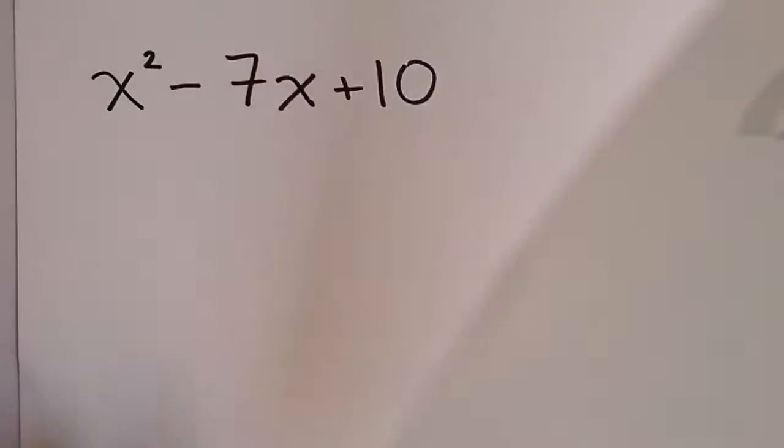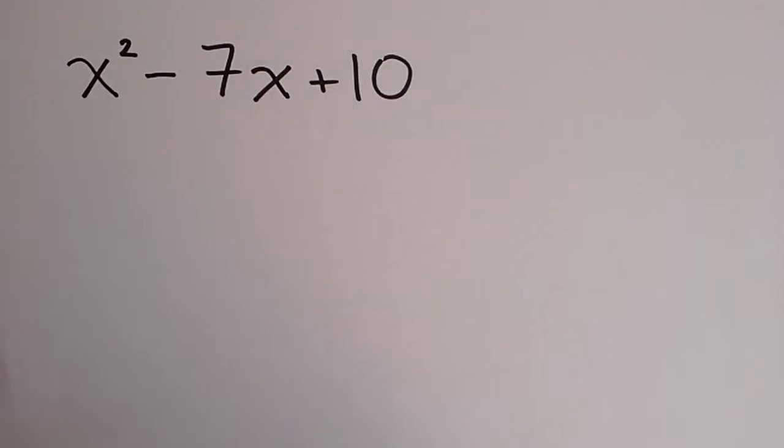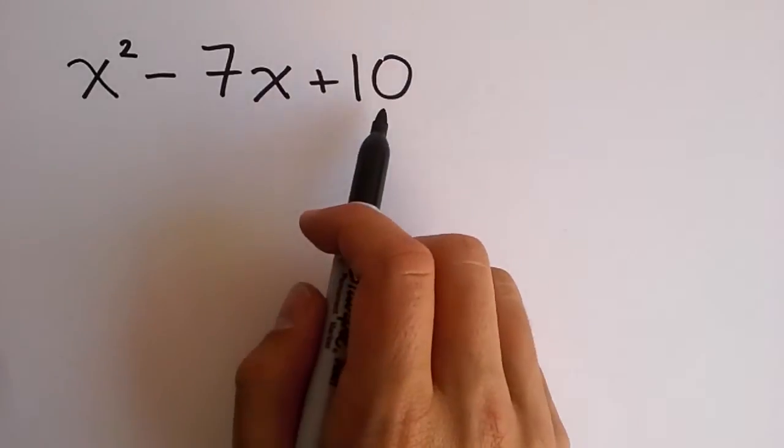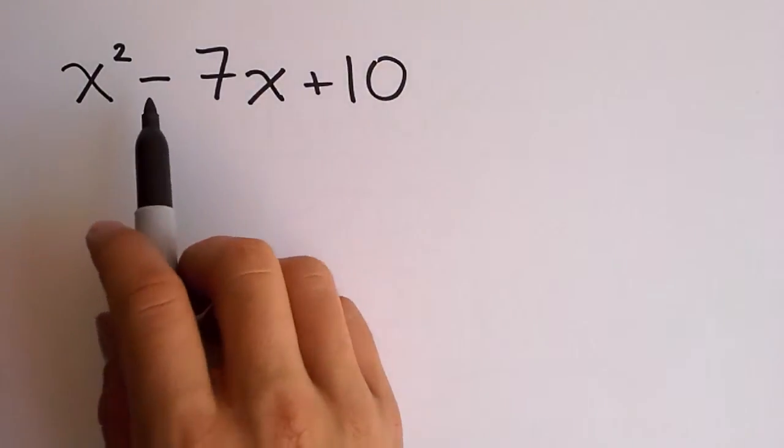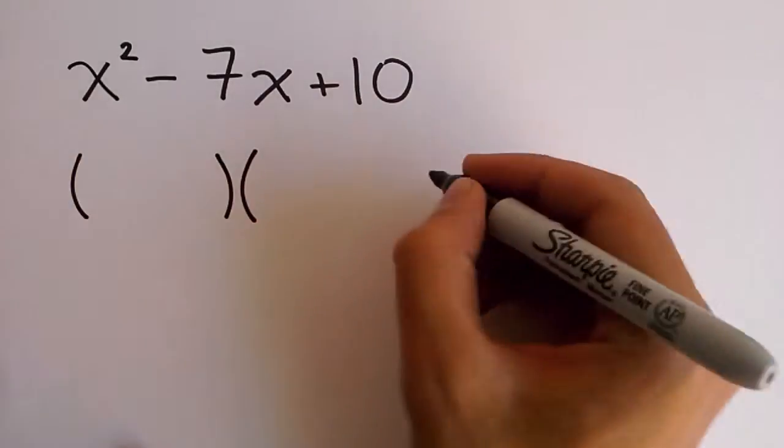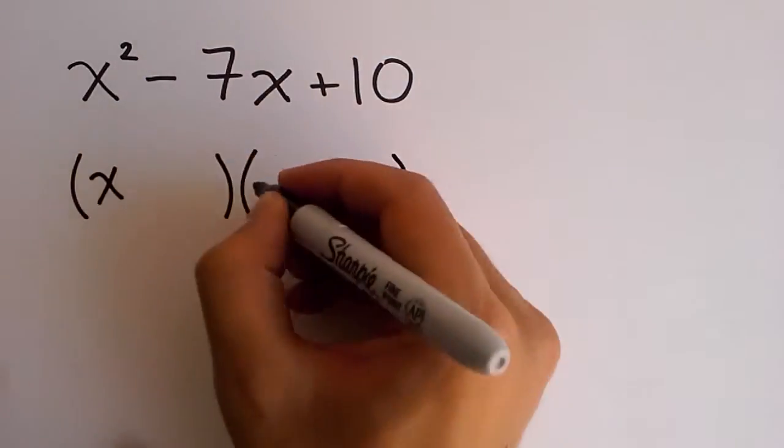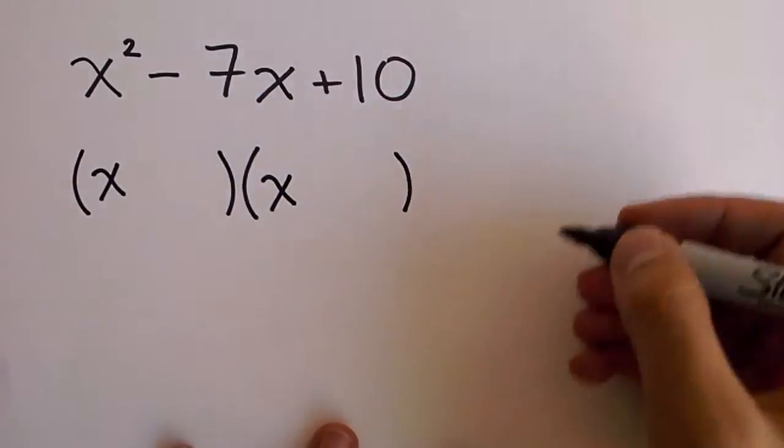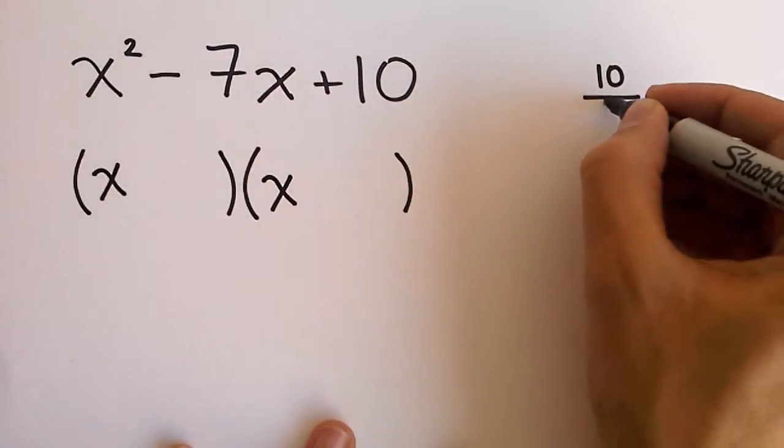For our third example, I want us to check what happens when the constant term is positive, but the term in the middle is negative. So, as usual, we begin with our two parenthesis, and then let's check out the factors of 10.